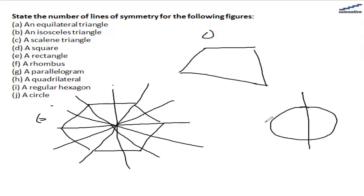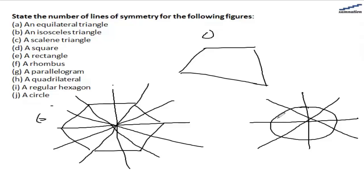For a circle, we can have an infinite number of lines of symmetry. Because at any point, we can draw any diameter passing through the center, and the shapes will be symmetrical.